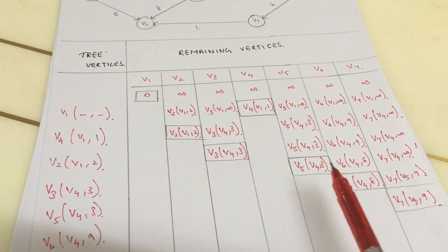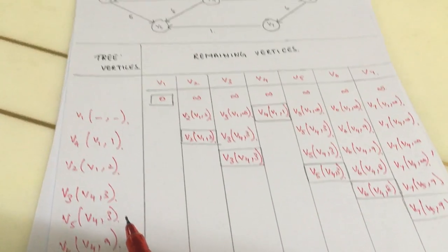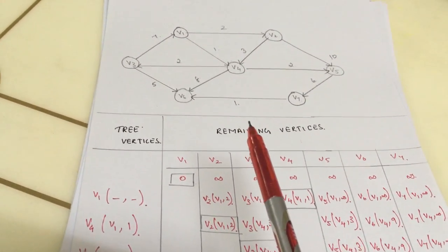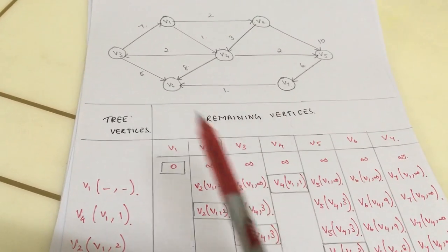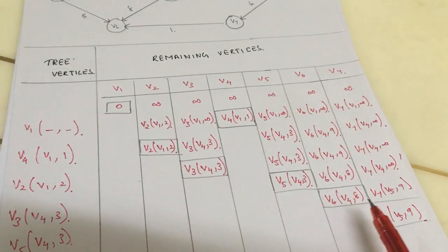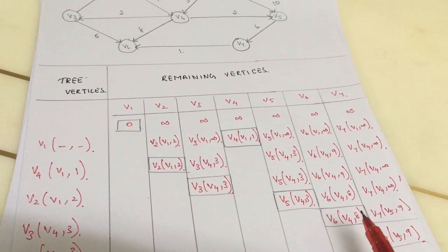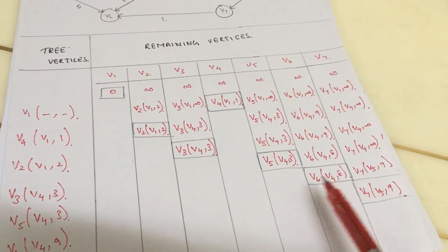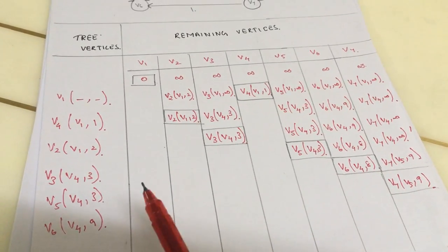From here, the minimum value is v5, v4, comma, 3. We will put that as the next entry. From v5, we will consider the vertices — v5 to v7 is the only direction. Therefore v7 becomes v5, comma, 9. And v6 retains the previous value: v4, comma, 8. The minimum value in this entry is 8, so we take v6, v4, comma, 8.